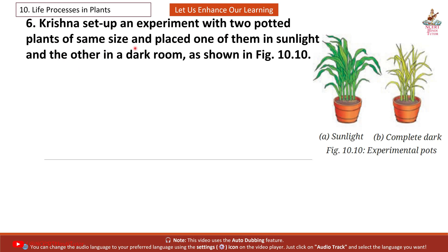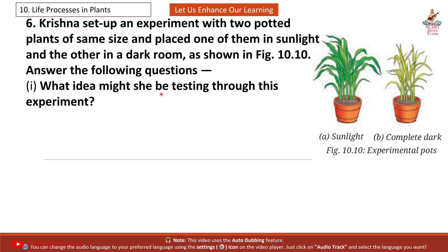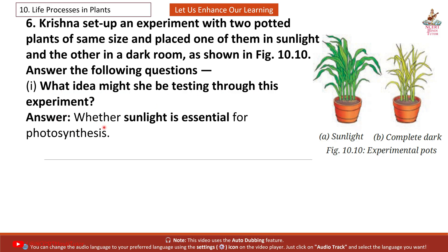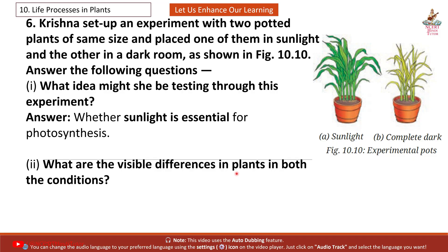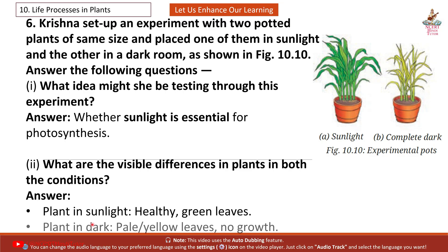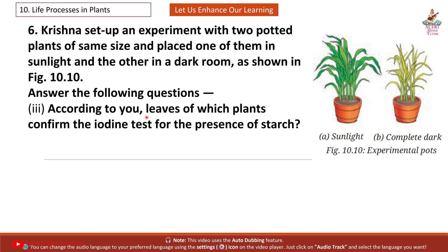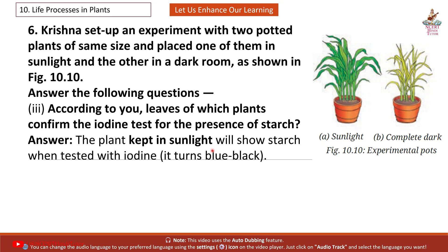Question 6: Krishna set up an experiment with two potted plants of the same size and placed one in sunlight and the other in a dark room (figure 10.10). Answer the following questions: 1. What idea might she be testing? — Whether sunlight is essential for photosynthesis. 2. What are the visible differences? — Plant in sunlight: healthy green leaves. Plant in dark: pale yellow leaves, no growth. 3. Leaves of which plant confirm the iodine test for starch? — The plant kept in sunlight will show starch when tested with iodine; it turns blue-black.